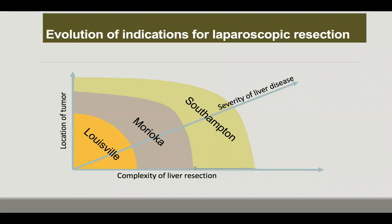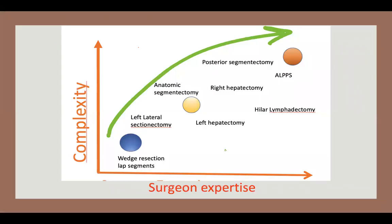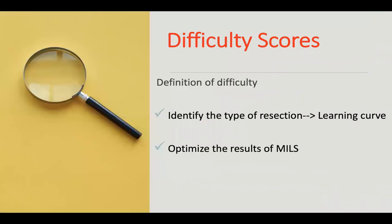The indications for laparoscopic liver surgery have evolved during the last few years, with more complex liver resections in patients with more severe liver disease and tumors located in every segment of the liver. For this reason, the complexity of intervention should be matched with surgical expertise. Recently, BOZA introduced several difficulty scores in order to identify the type of resection, match it to the learning curve of the surgeon, and optimize the results of laparoscopic liver resections.